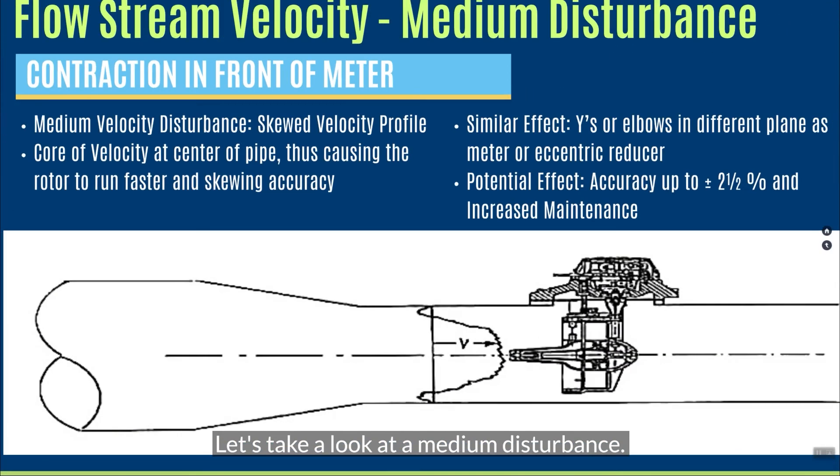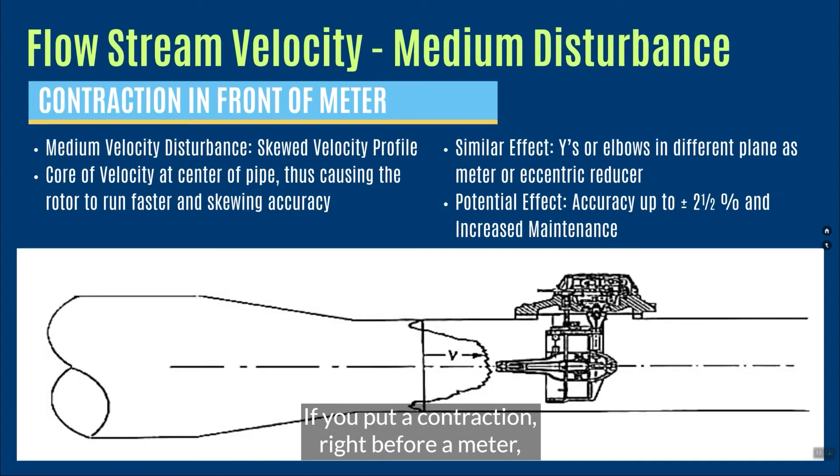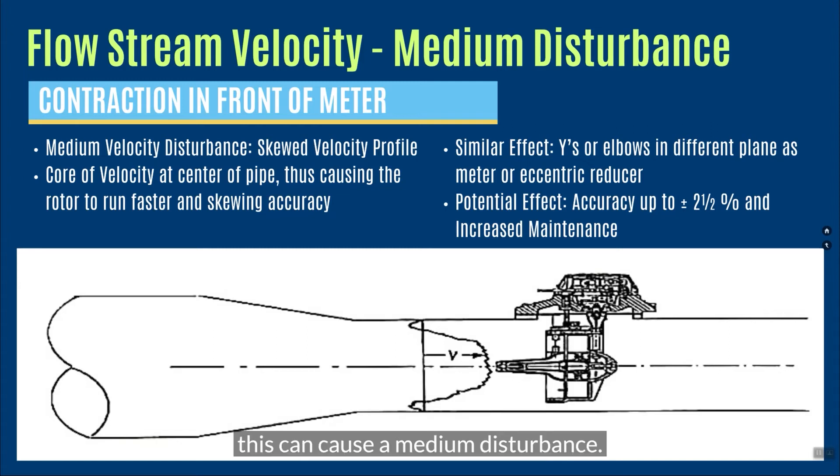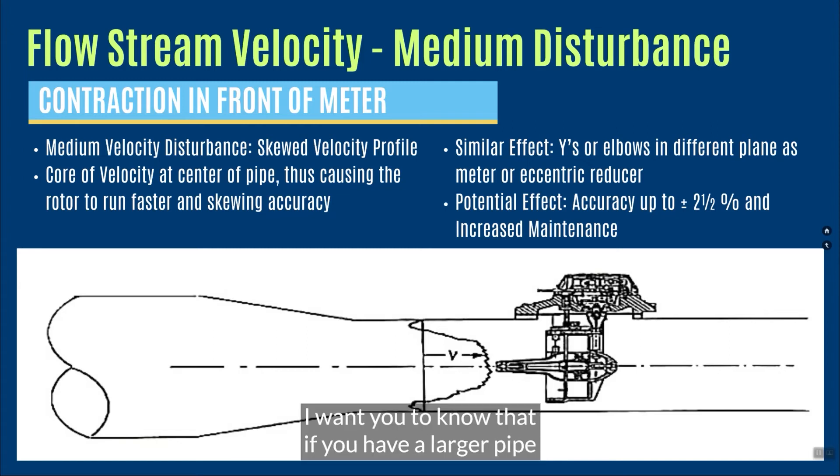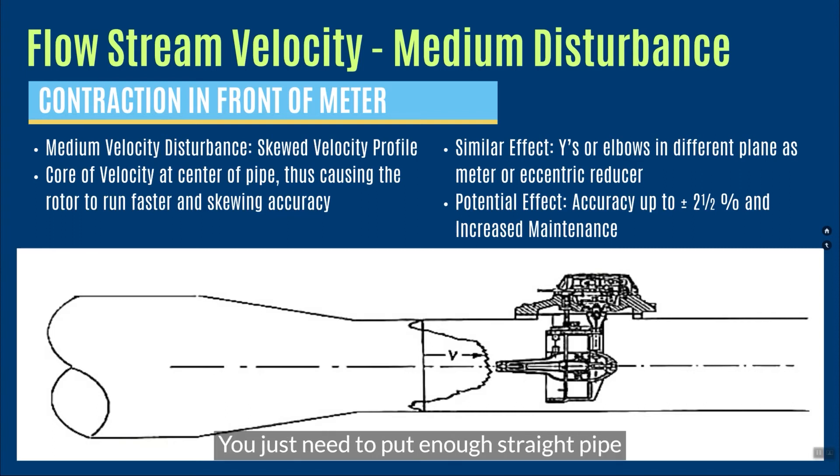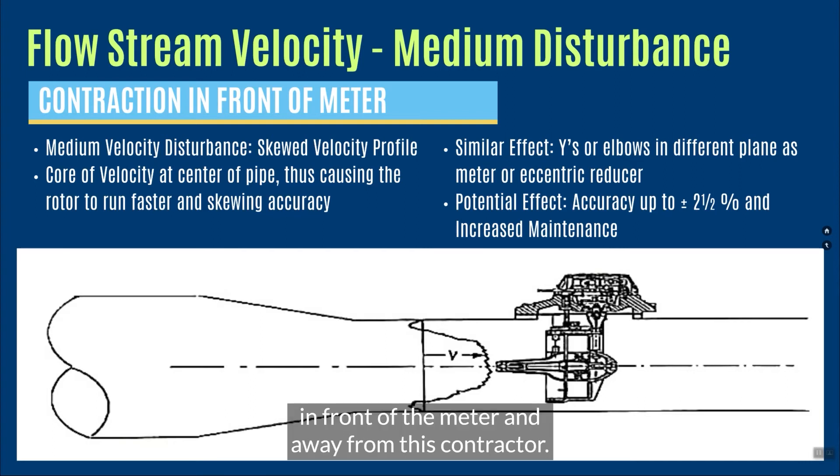Let's take a look at a medium disturbance. If you put a contraction right before a meter, this can cause a medium disturbance. I want you to know that if you have a larger pipe and you need to put in a smaller meter, you can do that. You're supposed to do that if it fits the application. It's okay to downsize a meter. You just need to put enough straight pipe in front of the meter and away from this contraction.